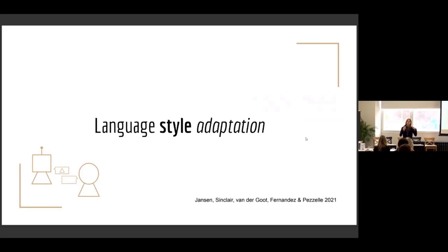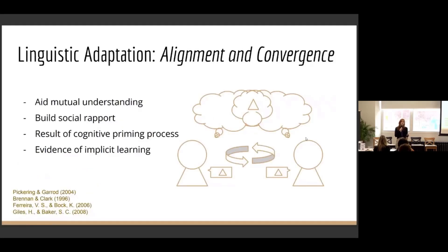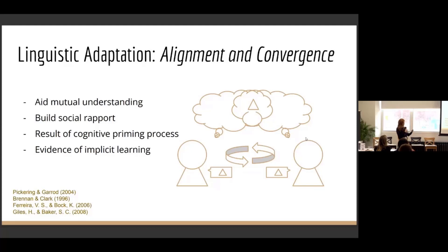I'm going to talk about one particular type of adaptation that's interesting, which is in terms of language style. When we speak to one another in conversation, we tend to adapt to one another at various different levels. This can look like repeating one another's words to show that we're understanding one another, just to show that we understand key vocabulary. This can vary depending on the speaker you're talking to — if you both speak in a very similar manner, this can lead to increased ease of understanding one another. But how can we better understand how these differ, so that we don't create dialogue systems that are one size fits all?